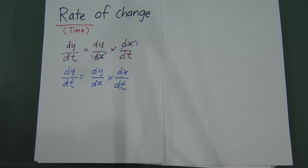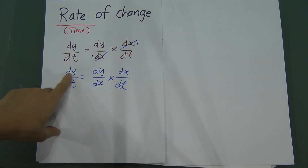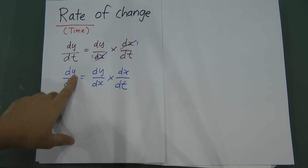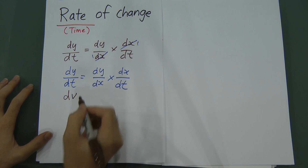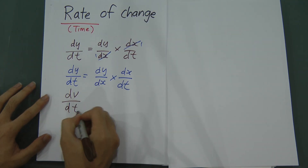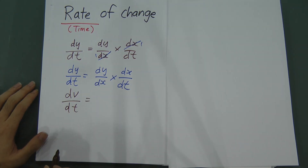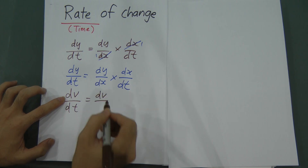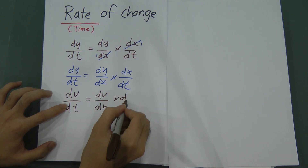The key point here is that Y and X can be anything. When you do actual questions, sometimes you won't see Y — maybe you'll see DV, meaning he differentiates the volume over time. And then when this involves volume, X can change to radius R. So maybe this becomes DV/DR multiplied by DR/DT.